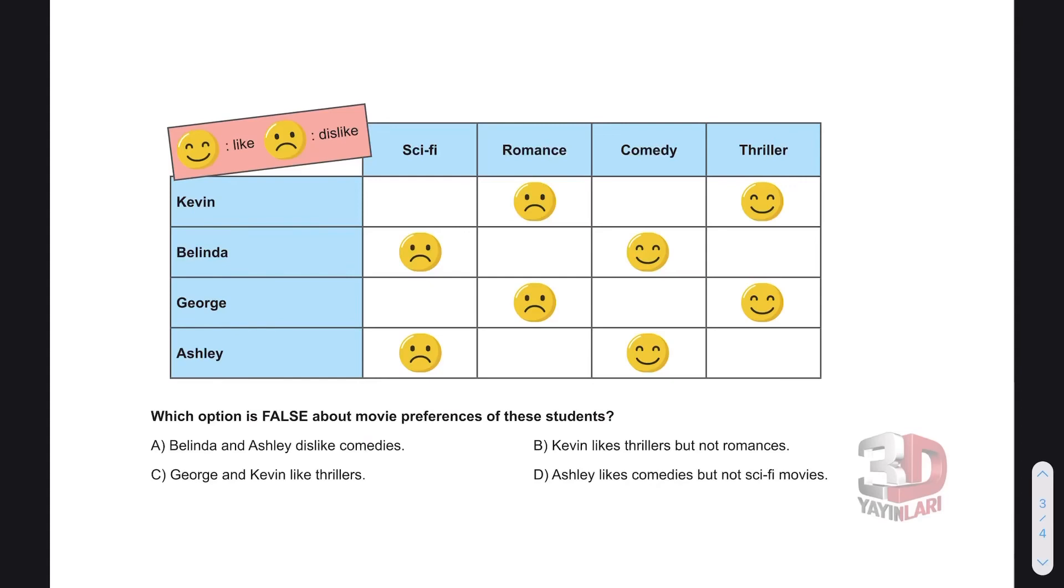Hello everyone. Let's read the question. Which option is false about movie preferences of these students? Hangi seçenek yanlıştır? False. Let's look. Belinda and Ashley dislike comedies, komedi filmlerini sevmiyorlar. Let's see. Belinda likes comedies. Ashley likes comedies. This is false. Yanlış. Cevap A şıkkı.